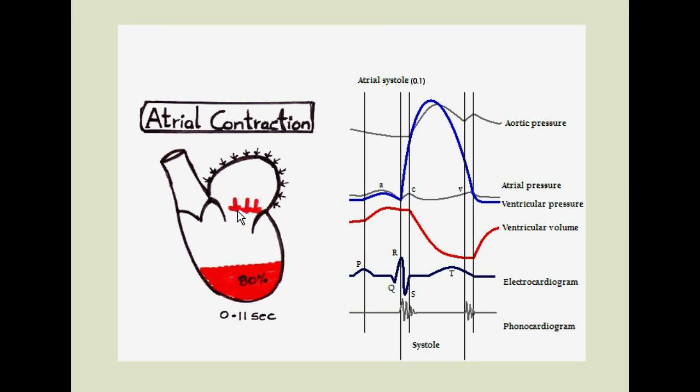As the atria contract, the atrial pressure increases and this increased pressure is shown in the form of wave A. As the atrioventricular valve is open here, the pressure in atria is transferred to ventricles and we get the same pressure wave as a blue colored wave and it is the ventricular pressure. As aorta is supplying the blood to other parts of the body, the pressure in it slowly decreases and it is shown here.